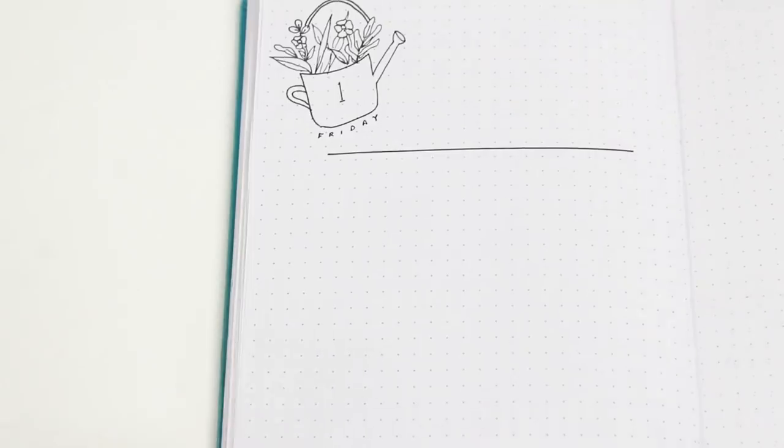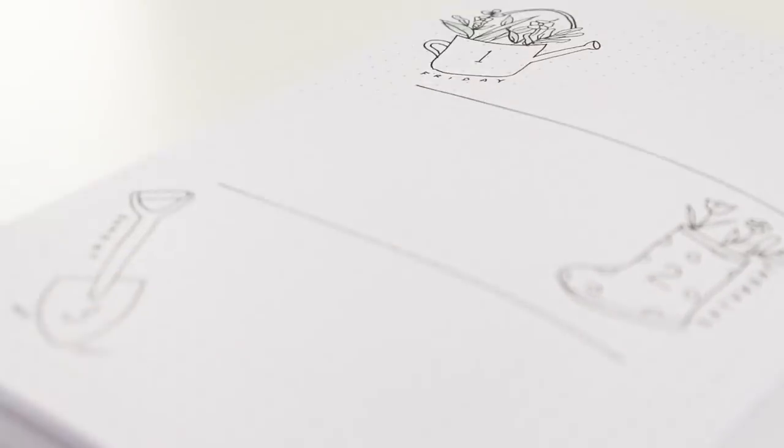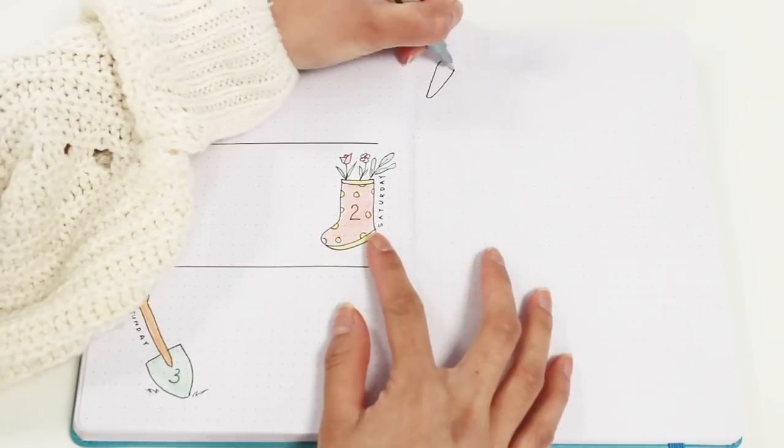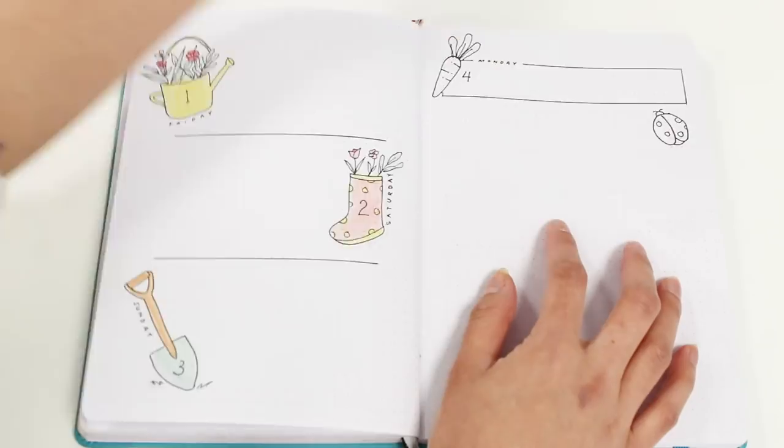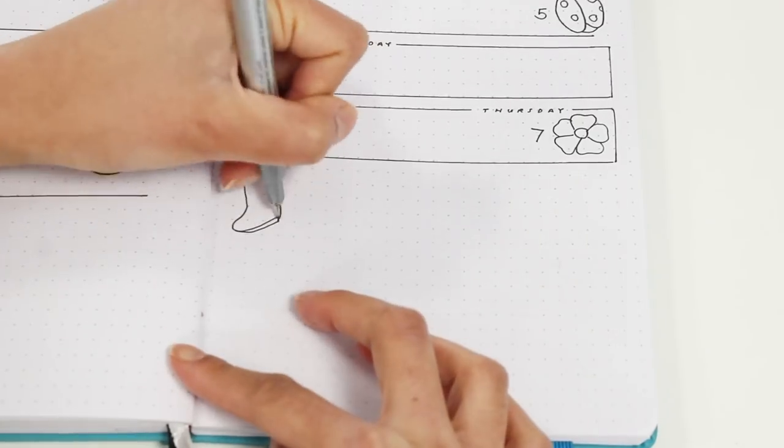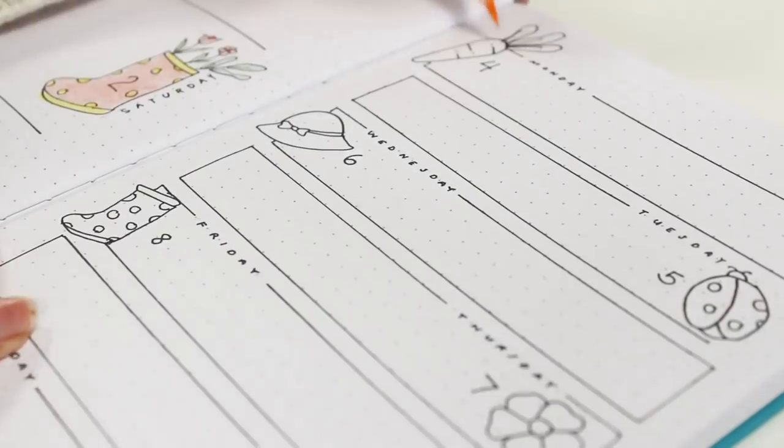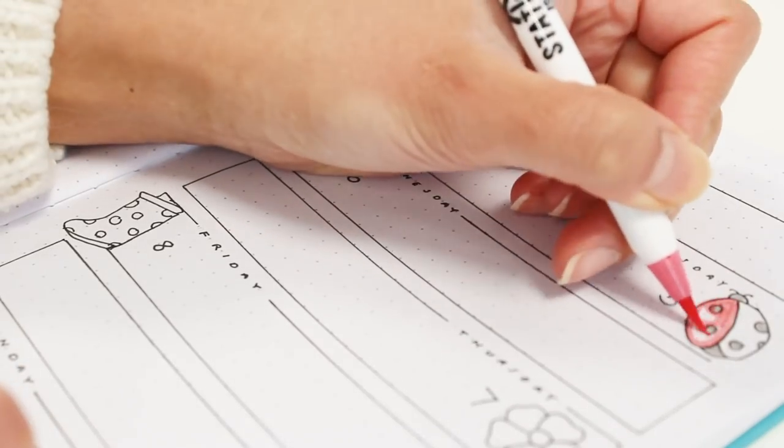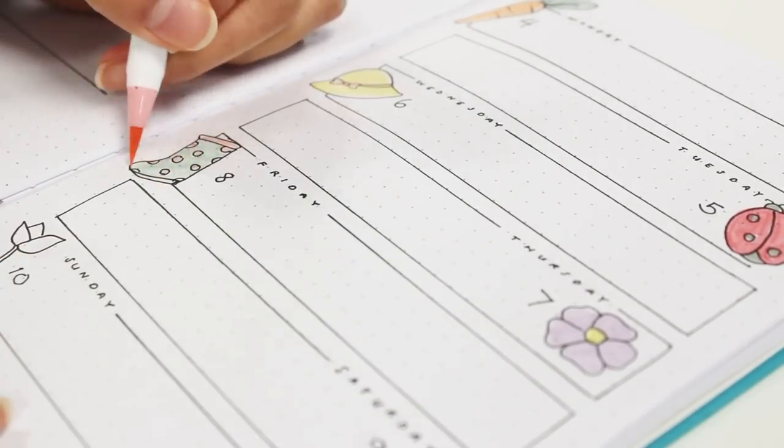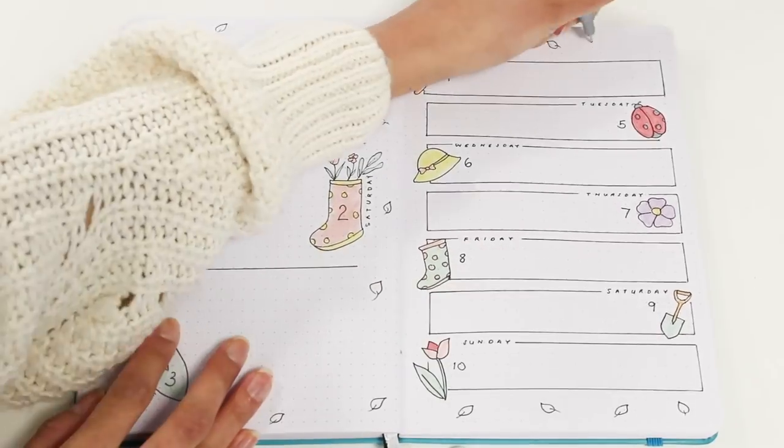And finally I'm doing my weekly page. As mentioned in my February plan with me, I'm only doing one page for each week now just to save paper, and because I only really need a small section to write all my to-dos each day. So for my first weekly, since the week starts on a Friday, I'm just drawing a doodle for each day and dividing the page in three. For the next page I'm dividing the page in seven sections and adding a doodle for each day. And then I'm just decorating the rest of the two-page spread with leaves to tie everything together.